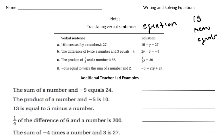Here are some examples: '16 increased by a number is 27' gives us 16 + n = 27. 'The difference of twice a number and three is four' gives 2n − 3 = 4. 'The product of one half and a number is 36' gives (1/2)n = 36. 'Negative three is equal to twice the sum of a number and two' — since sum means addition and it's twice the sum, we use the distributive property: −3 = 2(y + 2).